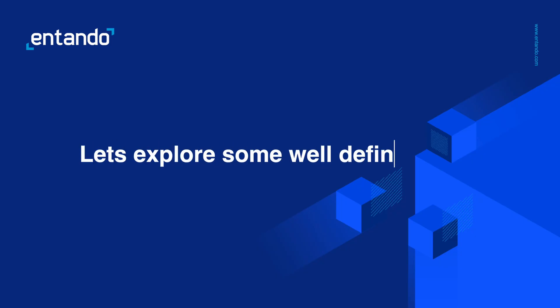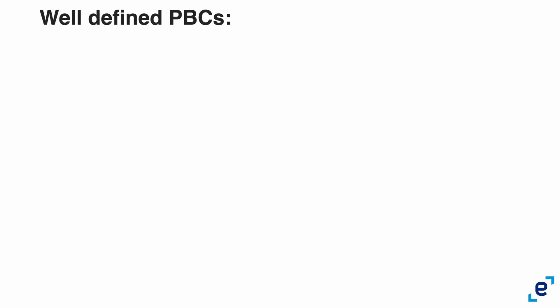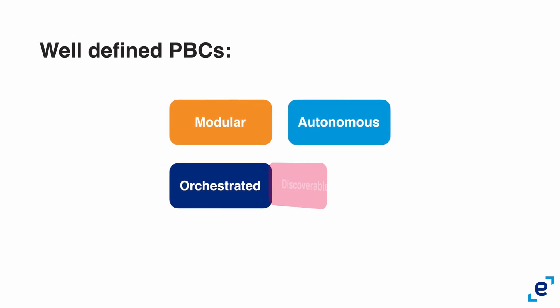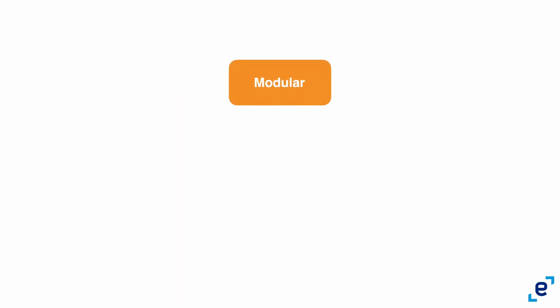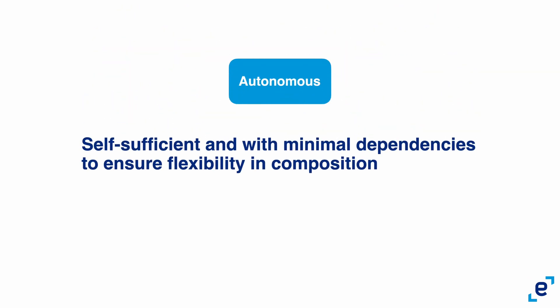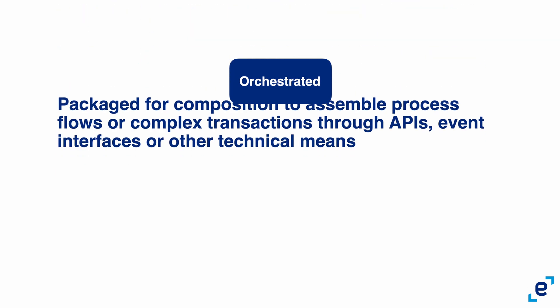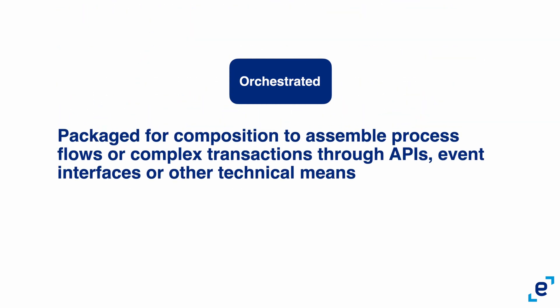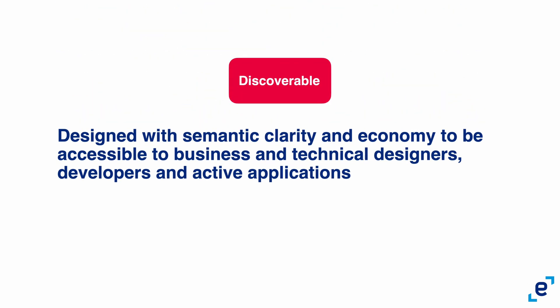To further explore some different areas of PPCs, I'll be using an article from Gartner as my source. Let's explore some well-defined PPCs. Modular — partitioned into a cohesive set of components. Autonomous — self-sufficient, and with minimal dependencies to ensure flexibility in composition. Orchestrated — packaged for composition to assemble process flows or complex transactions through APIs, event interfaces, or other technical means. Discoverable — designed with semantic clarity and economy to be accessible to business and technical designers, developers, and active applications.